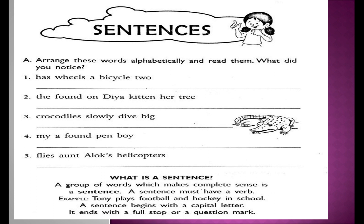In fact, these are written here in the form of phrases. We cannot say that these are sentences. Just look at the first one: 'Has wheels a bicycle too?' Does it convey a meaning or complete sense? I think your answer is no. Then read the instructions given over here: arrange these words alphabetically and read them. If we arrange these words alphabetically, it will be like this: 'A bicycle has two wheels.'